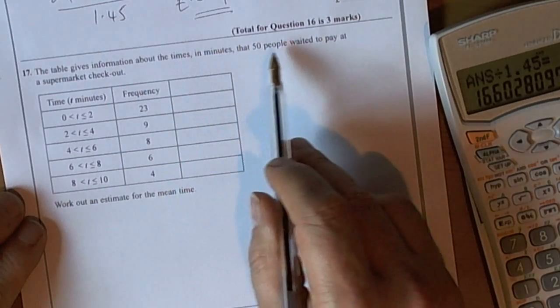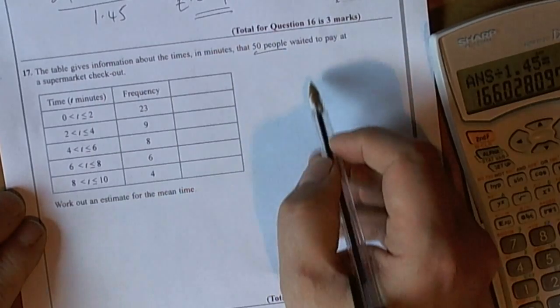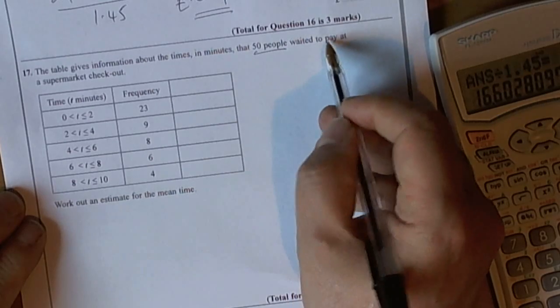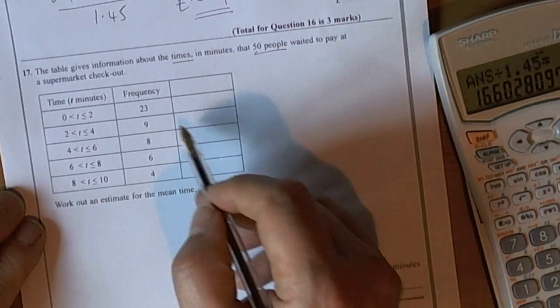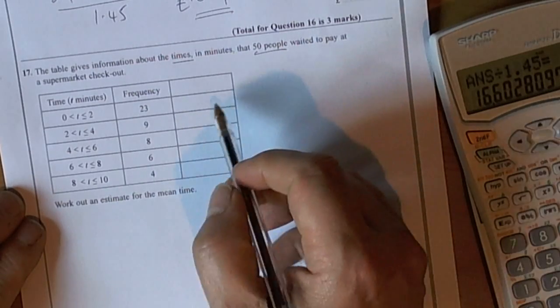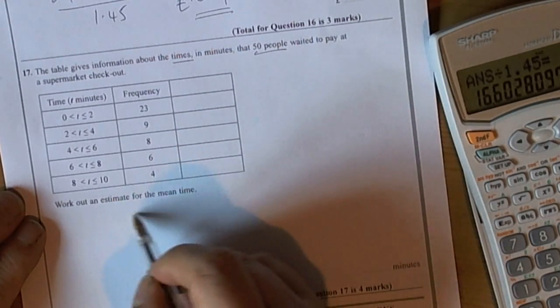This question is about 50 people and the amount of time they take to wait in the checkout before they can pay for their goods. So we look at the question - what does it want?